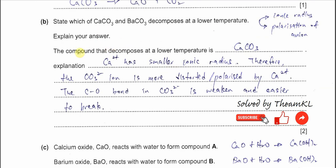The compound that decomposes at lower temperature is calcium carbonate. Because when calcium ions are compared to barium ions, the calcium cation has a smaller ionic radius — smaller size — and the charge is 2+ the same as the barium ion.